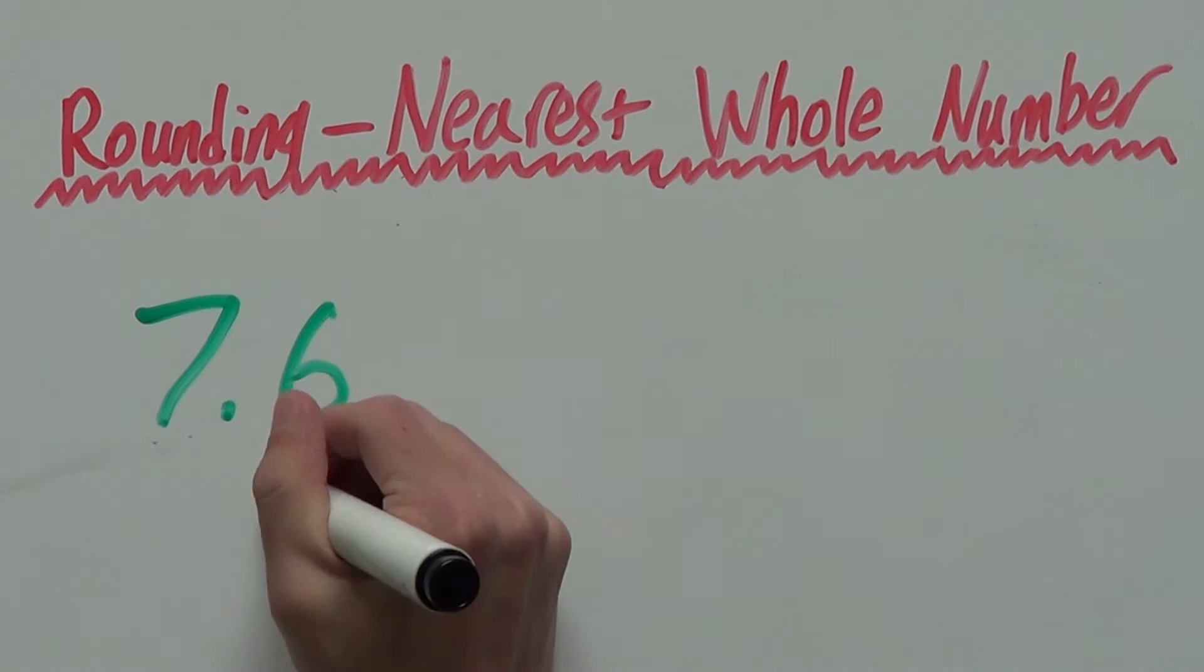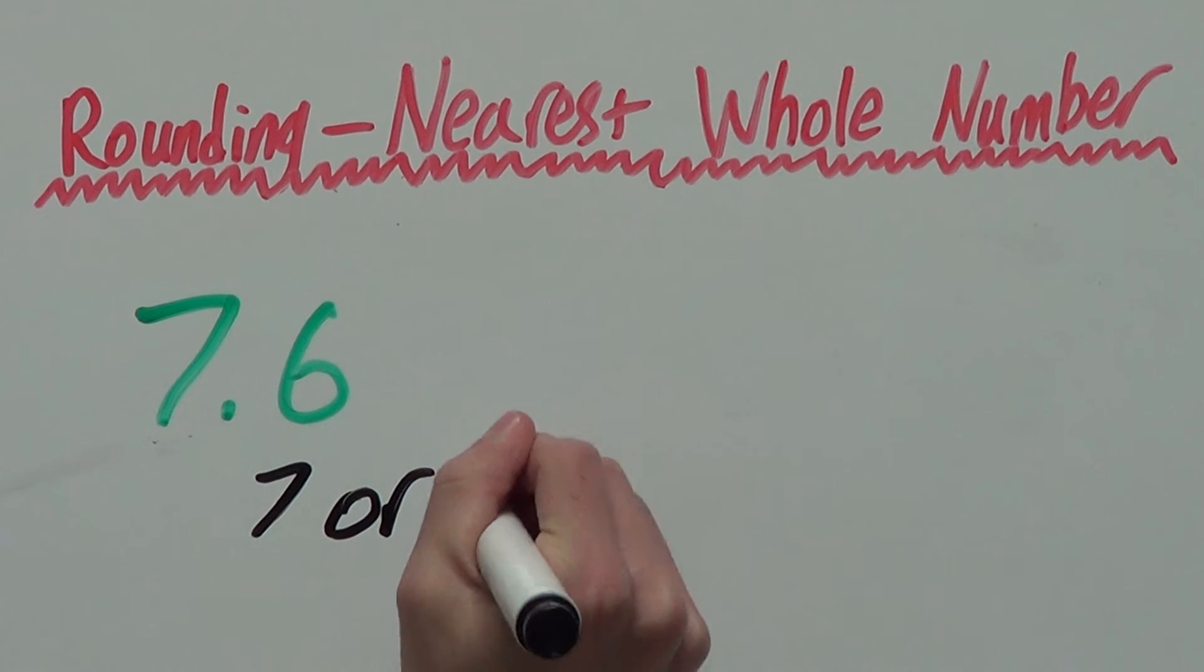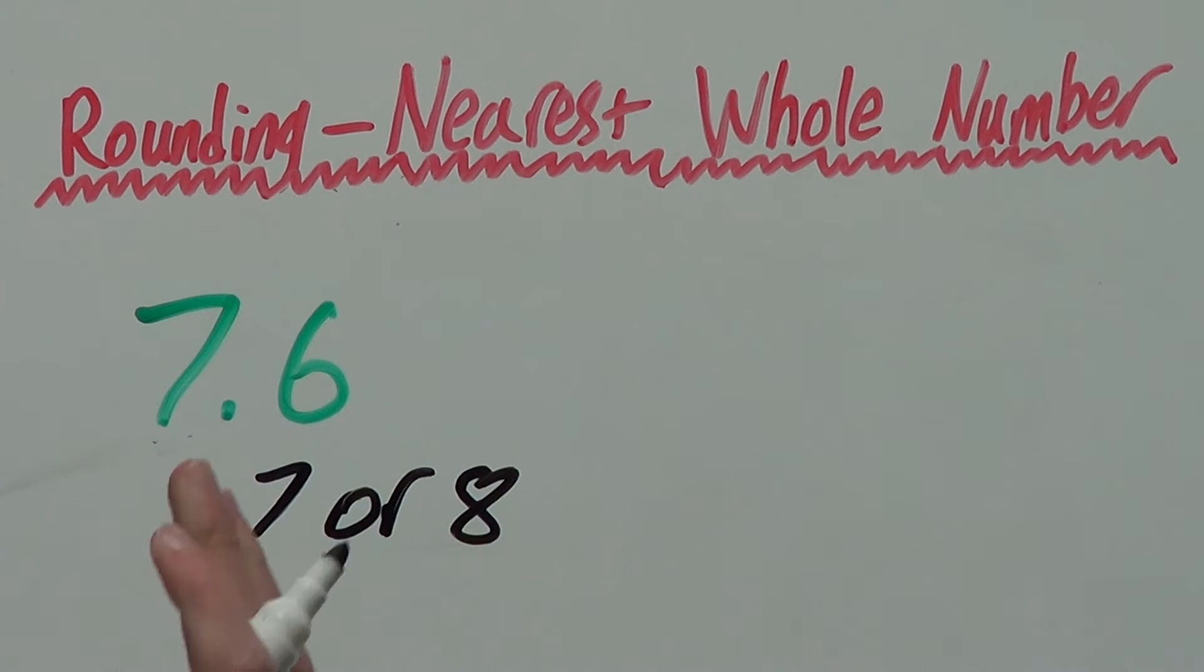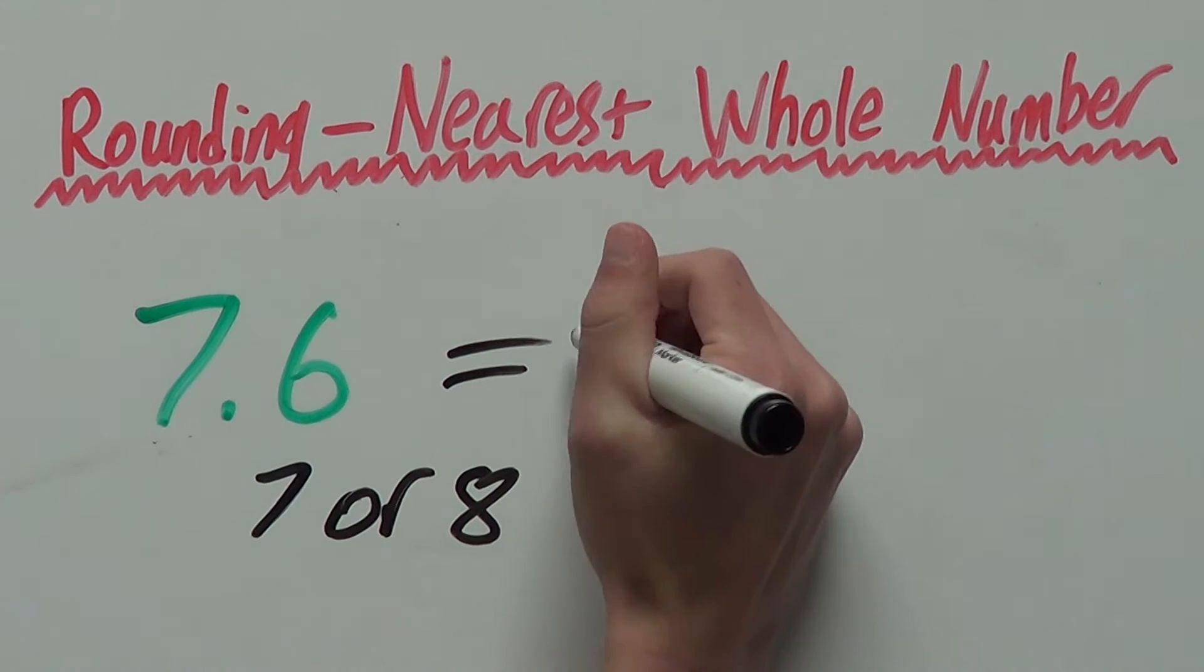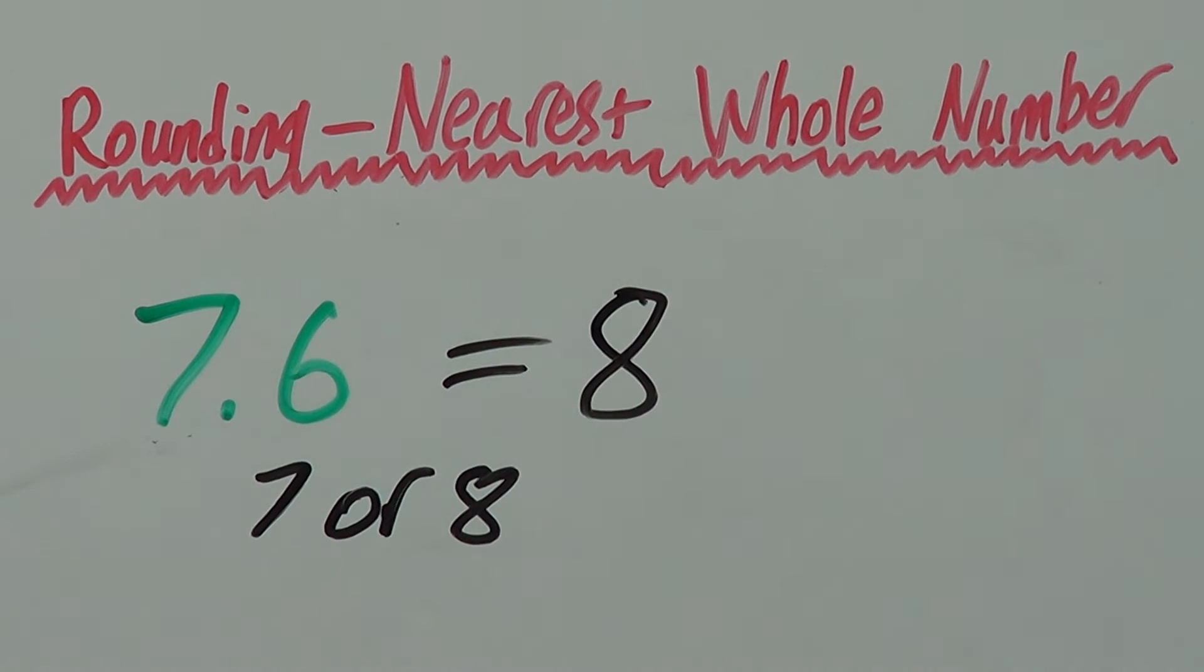Is this closer to 7 or 8? So, we're going to round this down to 7 or up to 8. Well, this number here, 7.6, is closer to 8, so we round up and our answer is 8.